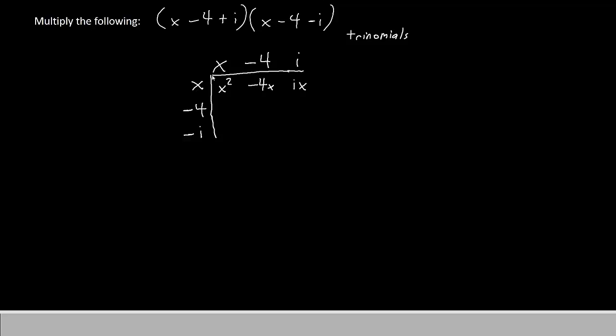Negative 4 times x is negative 4x again. Negative 4 times negative 4 gives positive 16. Negative 4 times i is negative 4i.